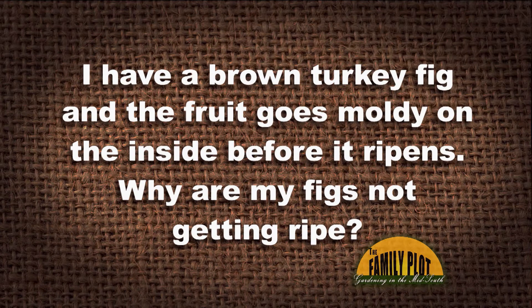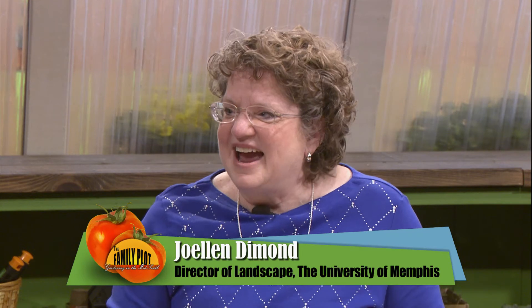All right, Joellen, this is our Q&A segment — you ready? Here's our first viewer email: "I have a brown turkey fig and the fruit goes moldy on the inside before it ripens. Why are my figs not getting ripe? Please help" — Fabion on YouTube. Brown turkey figs are delicious, but they're moldy on the inside before they ripen. Figs actually ripen from the inside out. So by the time the outside looks ripe while staying on the tree, it's already moldy on the inside. You usually pick figs when they're not quite ripe yet — pull them off the tree before they ripen.